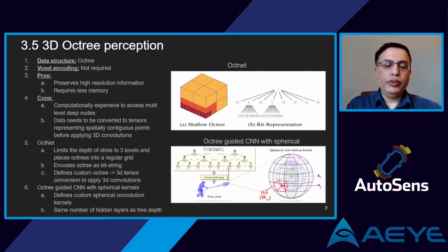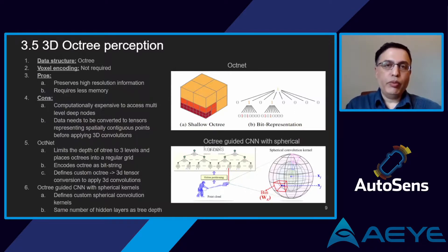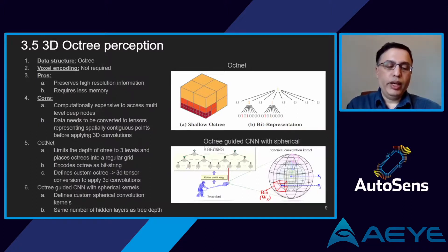There are two prominent examples of octree-based CNNs. The first, OctNet, limits octree depth to three levels and places octrees into a regular grid, encoding nodes using a bitstream encoding that is less memory efficient than a standard octree but computationally more efficient. OctNet defines custom operators for converting octree data into 3D tensors of spatially contiguous points, as well as spatialized 3D convolution and pooling operators. The second example is an octree-guided CNN with spherical convolution kernels, which divide 3D space into spheres. Unlike OctNet, this design uses deeper octrees but the same number of hidden layers, achieving higher accuracy at greater computational expense.